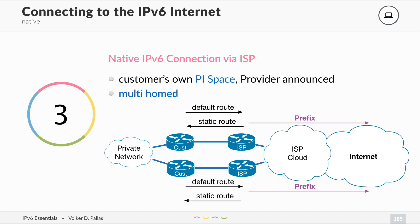Option 3 is where you have your own PI (provider independent) space. This means you have obtained your own prefix that belongs to you — either through your provider or directly from the RIR. This space belongs to you and can be announced by the provider. Routing is the same: you route defaults to the provider and the provider routes static towards your router, routing the prefix you own.